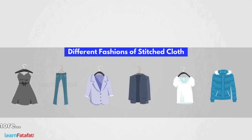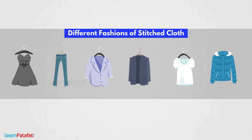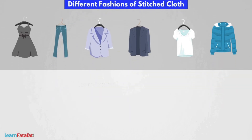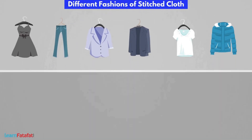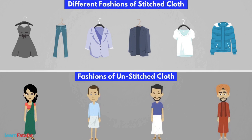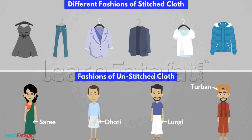Even though there are a variety of stitched clothes available today, the popularity of unstitched fabric — for example, saree, dhoti, lungi or turban — remains the same.